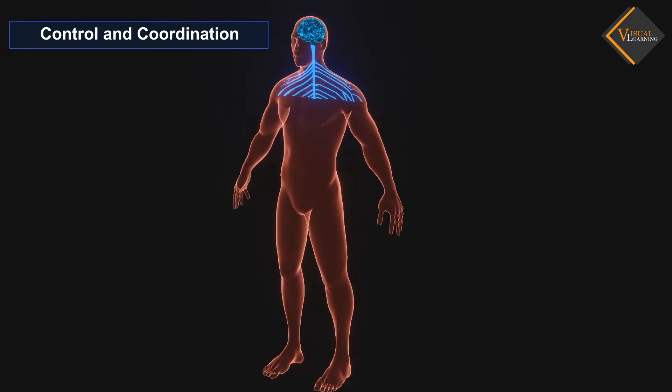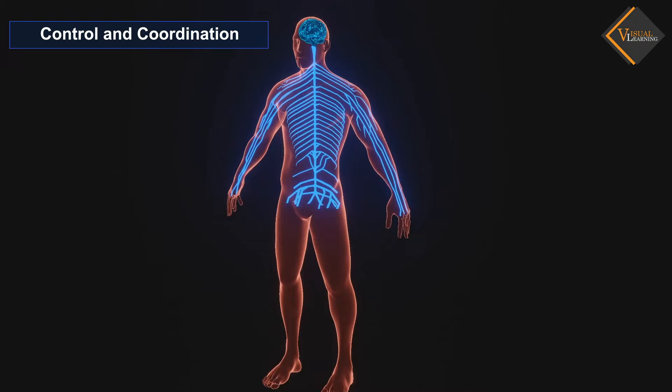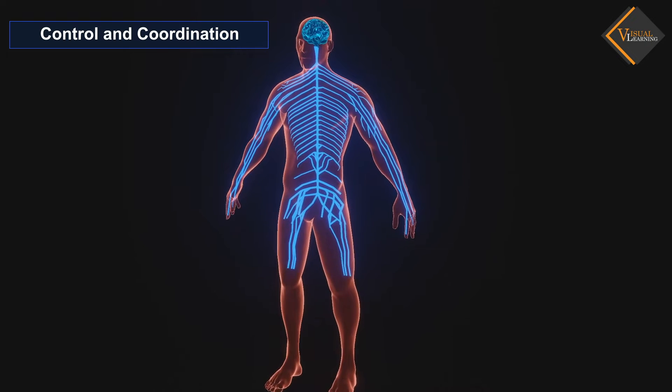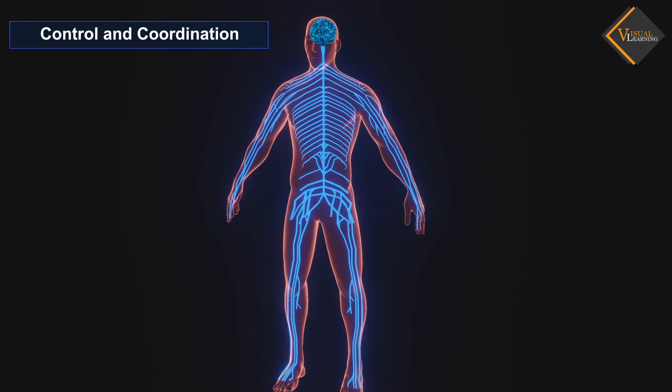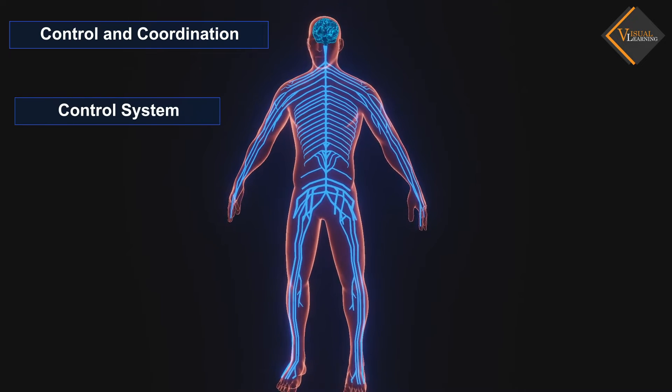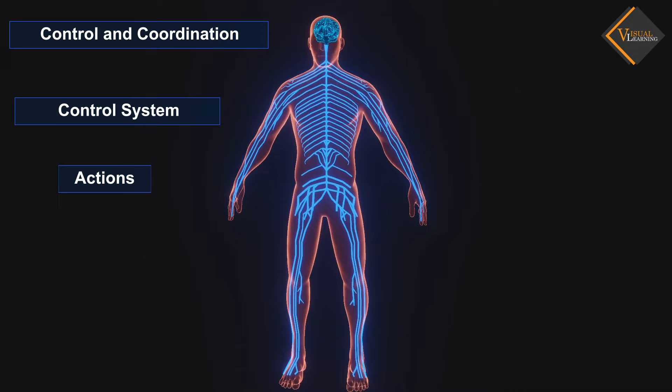Control and coordination in simple multicellular organisms take place through the nervous system, which coordinates activities of our body. It is a control system for all our actions, thinking, and behavior.